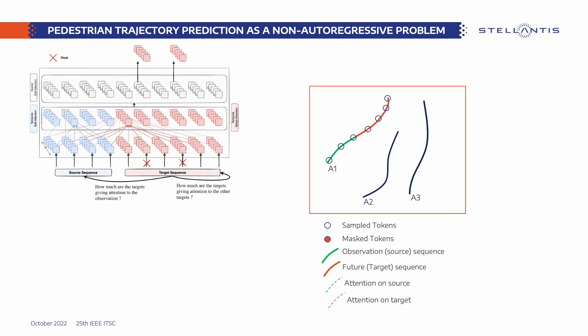To measure how much a task is non-autoregressive, we first randomly mask a portion of the target sequence states. The model should then reconstruct the masked timesteps using the source sequence and target sequence values. We calculate how much attention the model gives to the input states to reconstruct the masked tokens — this is called the target-to-source dependency. Likewise, we calculate the attention given to other targets to reconstruct the masked token — this is called the target-to-target dependency.